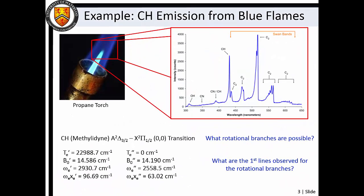For example, consider the A to X transition of methylodyne. Since delta lambda equals plus one, we expect P, Q, and R branches.